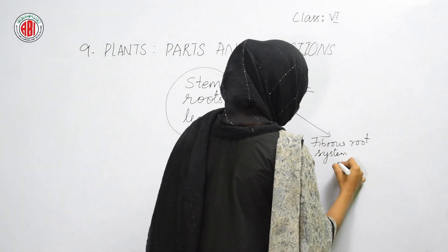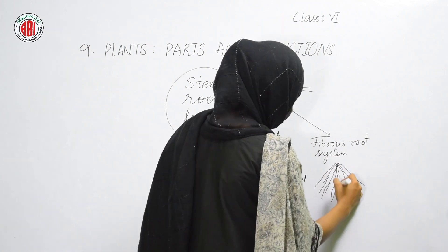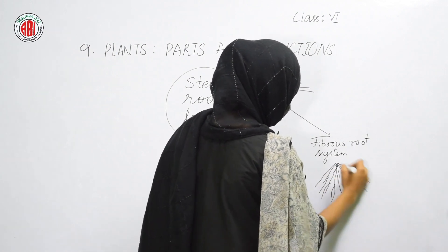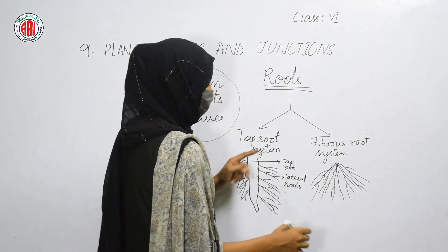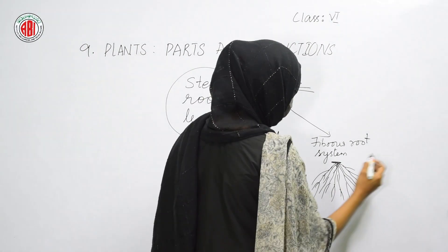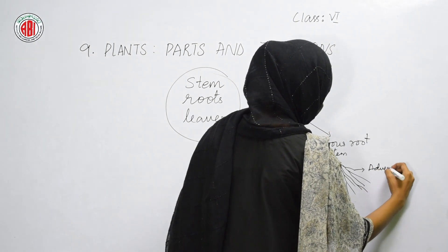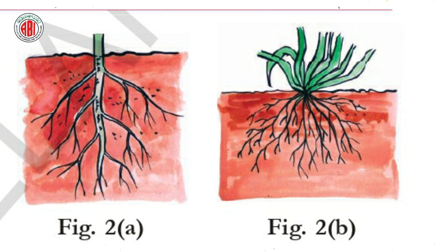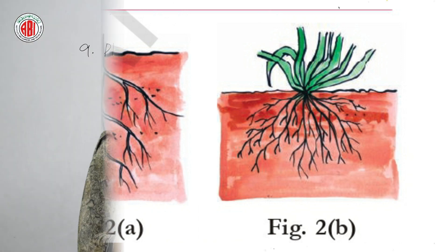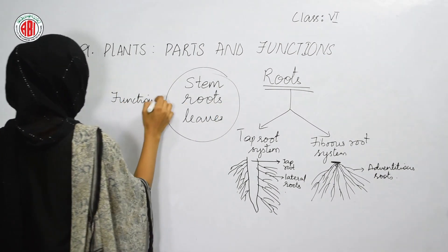In the fibrous root system, we can find thin hair-like structures. The roots look like hairs and are very thin, and they do not arise from any main thick stem. This type of system is called fibrous root system, and these roots are also called adventitious roots. So roots are of two types: tap roots and adventitious roots.